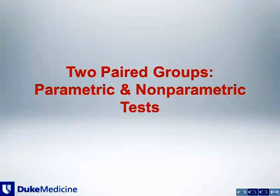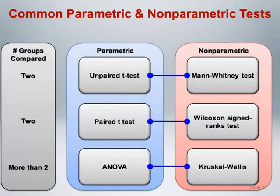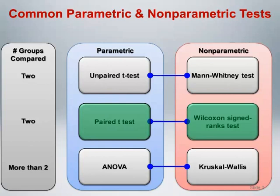Let's continue our discussion of parametric and nonparametric tests and move on to the case of two paired groups. In this section we will discuss the paired t-test and the Wilcoxon signed ranks test. Let's start with the paired t-test.